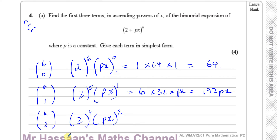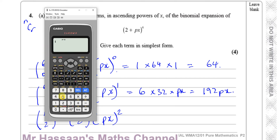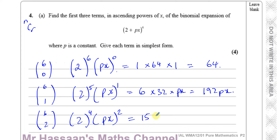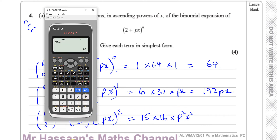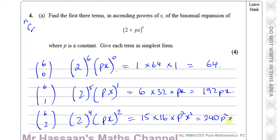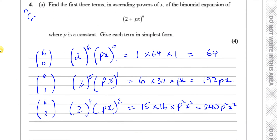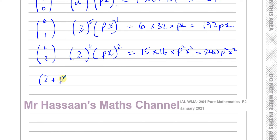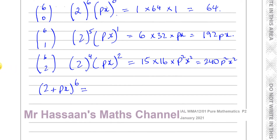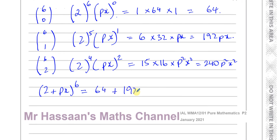For the third term we have 6C2. If you're not sure, you can use your calculator: press 6, shift, the NCR button, then 2, and it gives us 15. So the coefficient is 15. Then 2 to the power of 4 is 16, times P squared times x squared — don't forget to square both P and x. So 15 times 16 gives us 240, making the third term 240P²x².